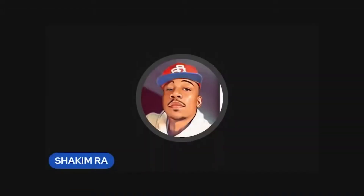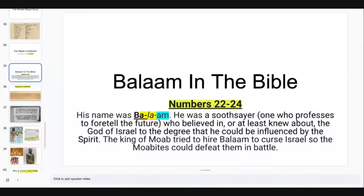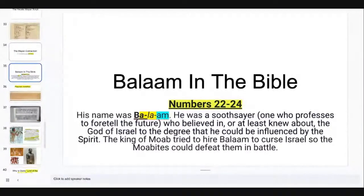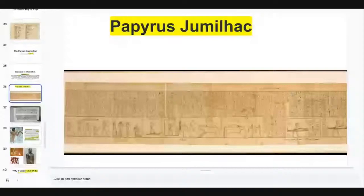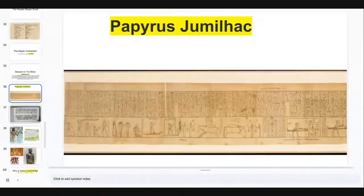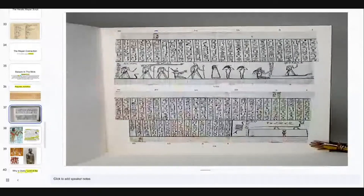Balaam wasn't some single demonic force — there were many Balaams because it was a name attached to many priests. It's very interesting that we see that name in the Hebrew Bible, which is set in what we now call the Middle East. We've also seen other biblical names in the Mayan language, such as the name of Canaan, which I will talk about in my next video. Now I want to talk about Papyrus Jumilhak, which is a significant papyrus for many reasons.